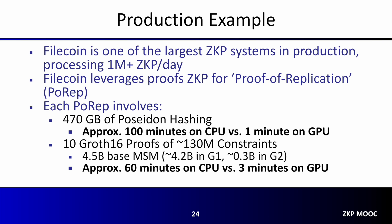To wrap up today's introduction to hardware acceleration for ZKP, I'd like to share a real-life example of how hardware acceleration is being used today. For the past several years, Filecoin has been one of, if not the biggest, ZKP system in production, with between 1 and 5 million proofs being generated per day on average. Filecoin uses ZKPs for proof of replication, or PoRep — a cryptographic way to prove that you have created a unique copy of a dataset. The proof of replication requires approximately 470 GB of Poseidon hashing, which on a many-core CPU system would take around 100 minutes. In comparison, the Filecoin GPU implementation takes only approximately one minute on a modern GPU — a roughly 100x performance improvement.